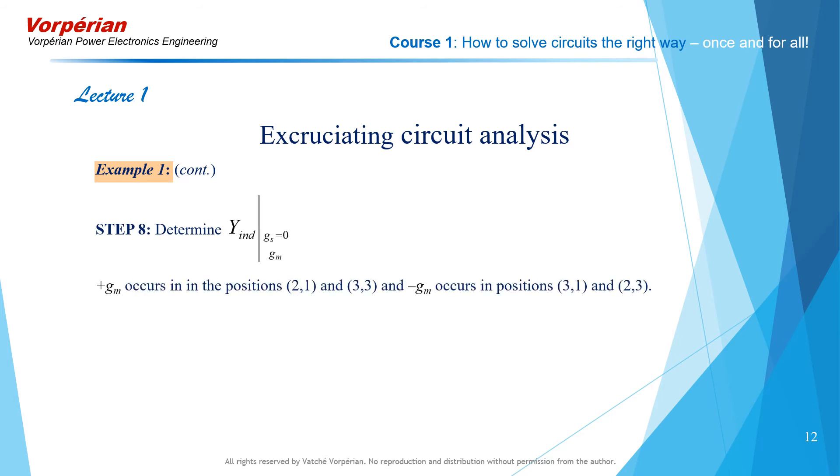And here's the second one, which is obtained by striking out the proper row and column, indicated here, after doing the addition and the subtraction of the rows and the columns as described early on. And we obtain this matrix. Now this one does not contain Gs or gm.